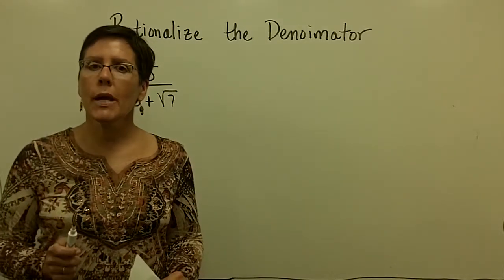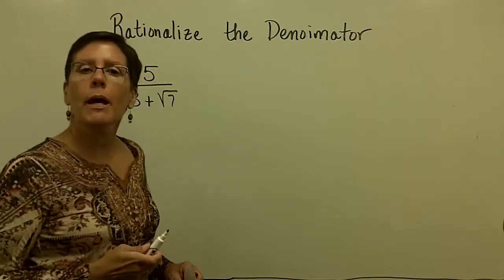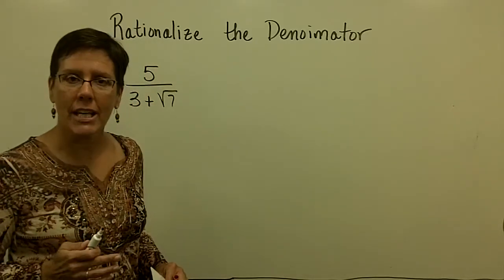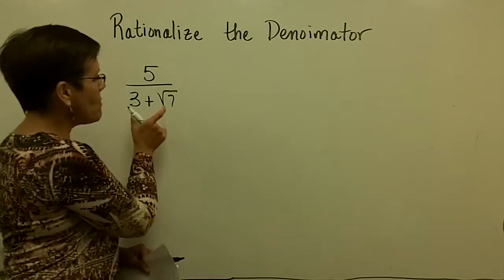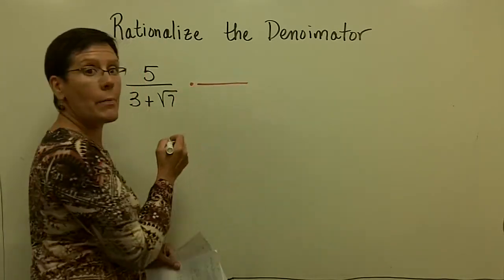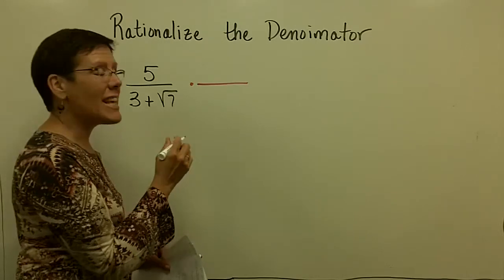What we do is take this denominator and multiply it by what's called its conjugate. We use the same binomial, multiply by it, except that we change the sign in the middle.